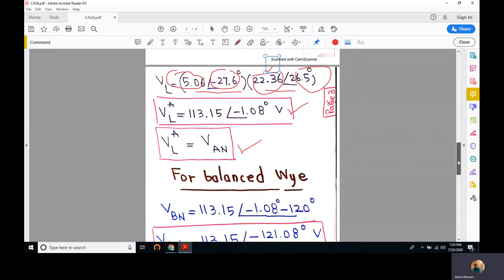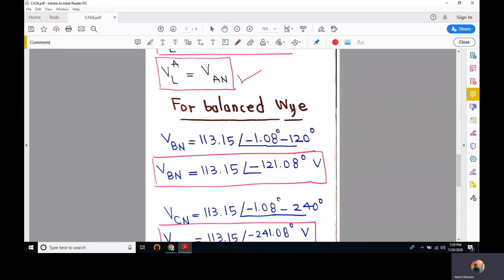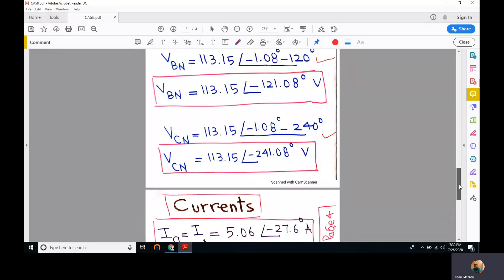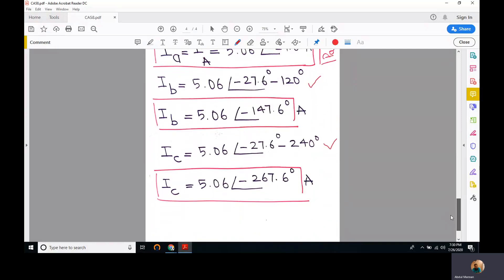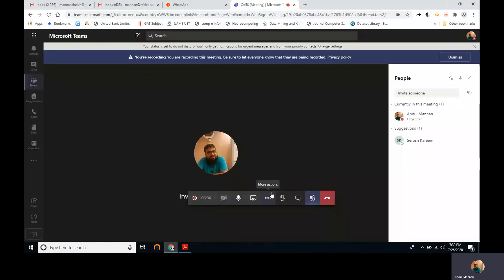For a balanced wye system, Vbn should be 120 degrees lagging compared to Van, and Vcn should be 240 degrees lagging. This is how we can represent Van, Vbn, Vcn and Ia, Ib, and Ic. We'll keep on studying three-phase systems in our upcoming lectures. Thank you very much.